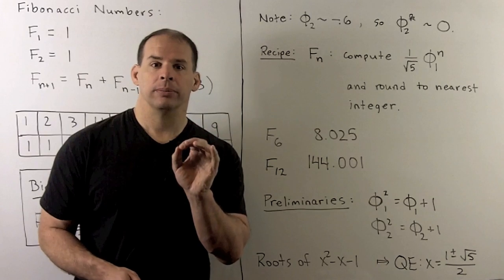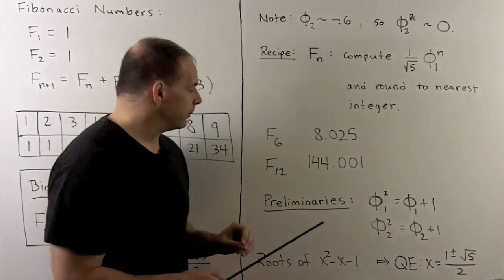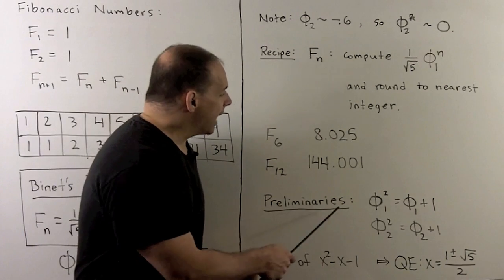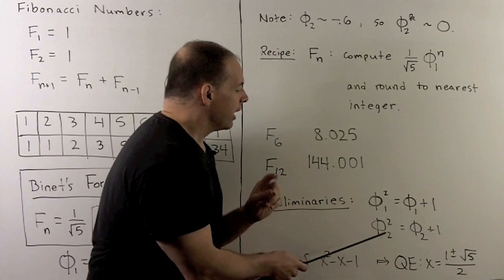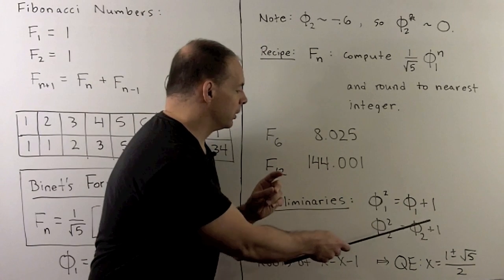Now, before we get to the proof, a little bit of preliminaries. So, we're going to need the fact that phi 1 squared is equal to phi 1 plus 1, and phi 2 squared is equal to phi 2 plus 1.